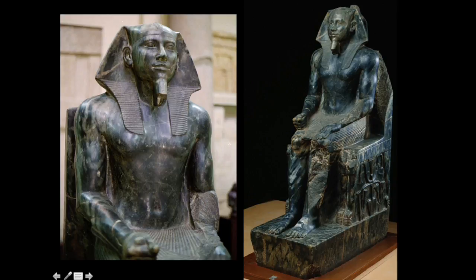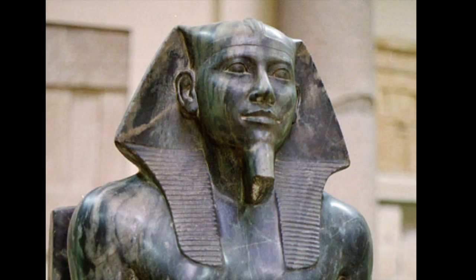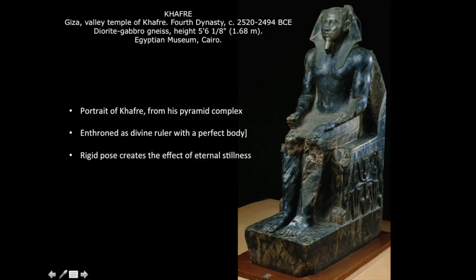Who do you think this is? What can you say about his expression? Where do you think this statue might have been located? This is a statue called Khafra Enthroned — a portrait of Khafra from his pyramid complex. He is enthroned as divine ruler with a perfect body and a rigid pose which creates the effect of eternal stillness. Khafra Enthroned is a good early example of that consistency of style to show divinity and balance so important to the ancient Egyptians.